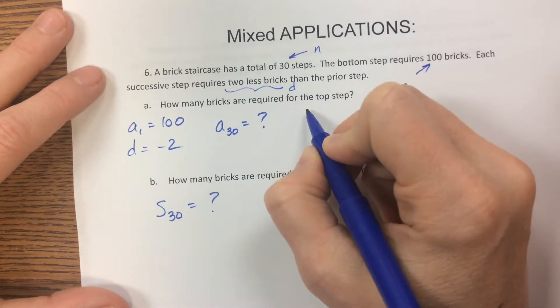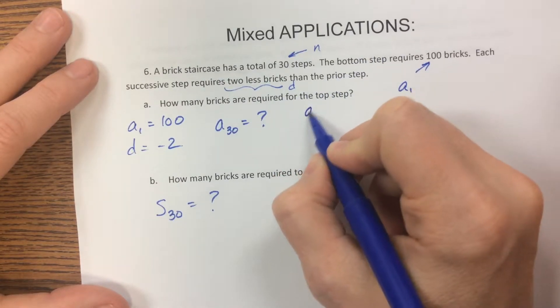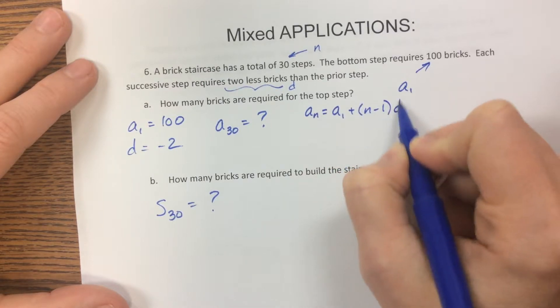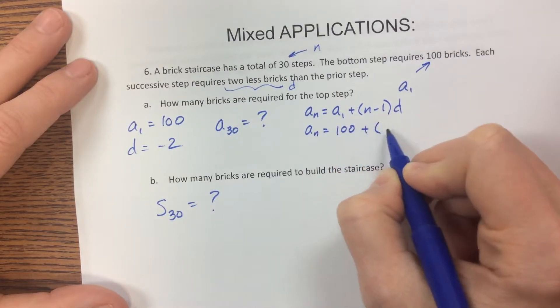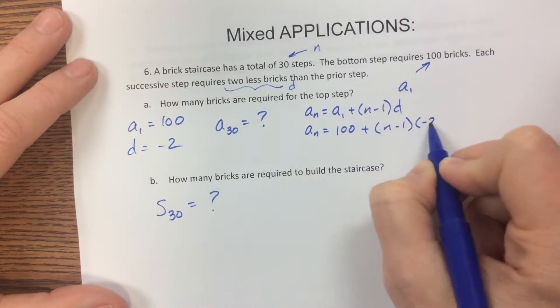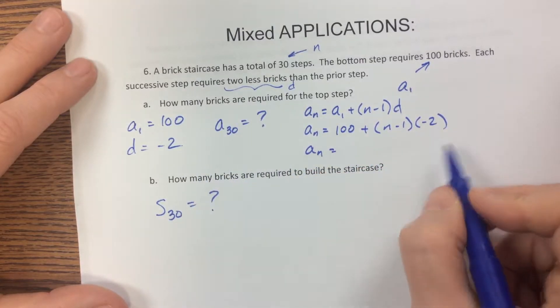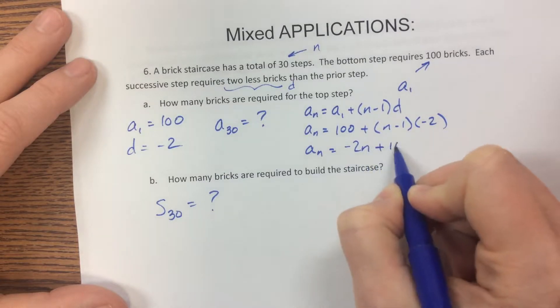So the first thing I would do would say, well, this is arithmetic since it's got a common difference. So a sub n is equal to a sub 1 plus n minus 1 times d. Let's plug in what we know. So I could clean this up or not. You could just plug in 30 at this point if you want, but here we go. This is negative 2 n plus 102.